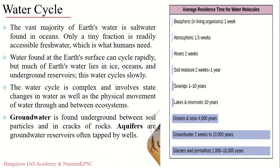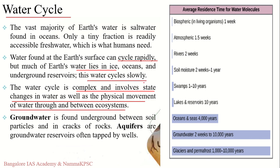The water cycle is complex and involves state changes in water as well as the physical movement of water through and between ecosystems. Water found at the earth's surface can cycle rapidly, but water beneath the surface — stored in the form of ice — cycles very slowly. Surface water on earth is cycled very rapidly whereas water stored underground, in the subsurface of oceans, or in the form of ice and glaciers is recycled very slowly.